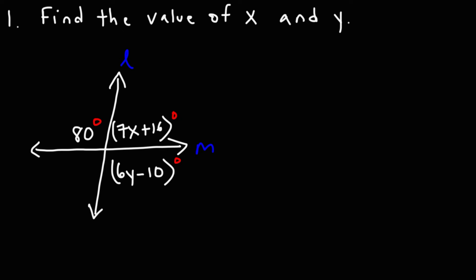Now let's try this problem. We have two lines, line L and M, with angles given in terms of X and Y. Find the value of X and Y. Let's call this angle one, angle two, and angle three. Angles one and three are vertical angles — they're across from each other — so we can set them equal to each other.